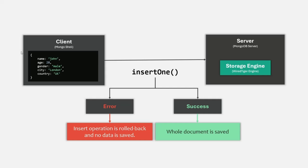Now we know what atomicity is. Another very important point related to atomicity is that atomicity is applied at the per-document level — not on the data level involved in the transaction. I'm talking about the main documents of a collection, not nested documents.